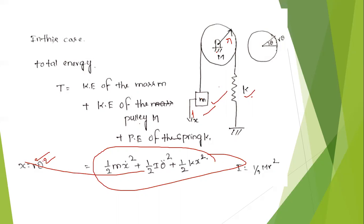This is torsional vibration. First, we discuss the kinetic energy. There are two types of kinetic energy: the kinetic energy of the mass in translational motion, and the kinetic energy of the mass in rotary motion. The kinetic energy in the longitudinal direction is ½·M·Ẋ². That means ½·M·Ẋ².